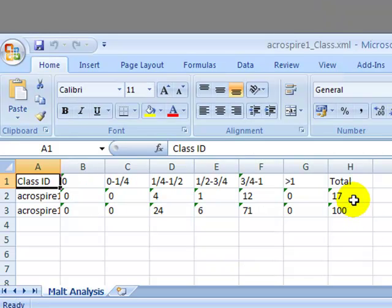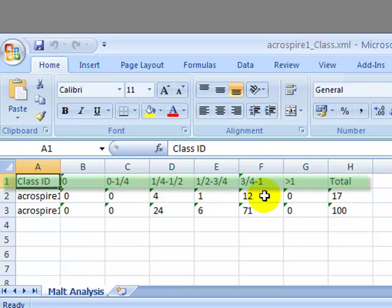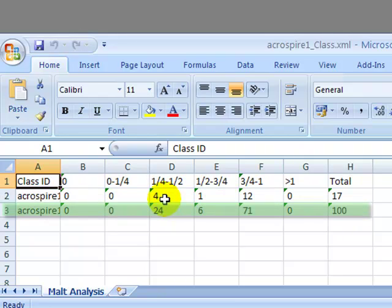The report presents the results of the analysis categorized in different classes. Here you may study the number of acrospires and the percentage of acrospires in each class.